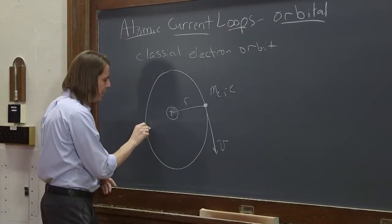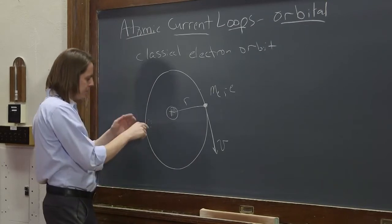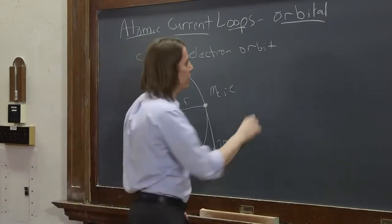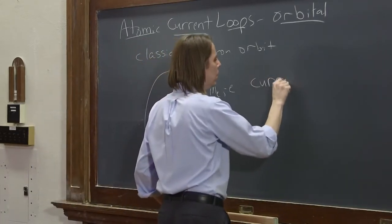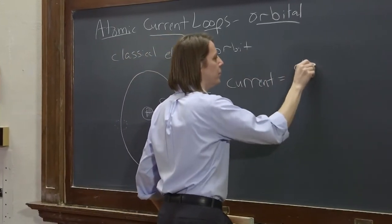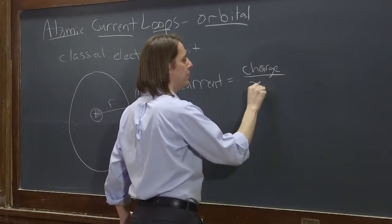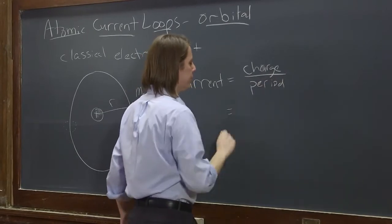So we could imagine a little plane that this electron goes through. And just how often does it go through? Right? So current would be the charge divided by the period of the motion.